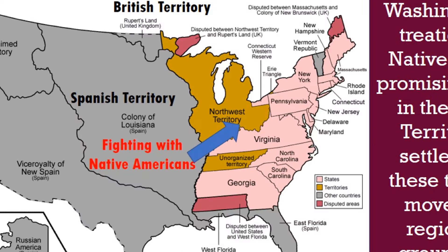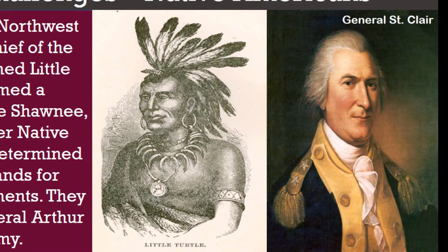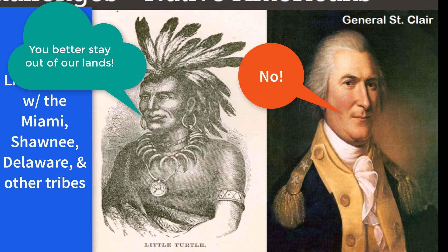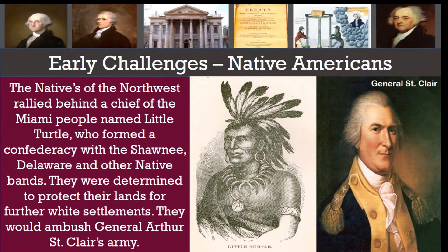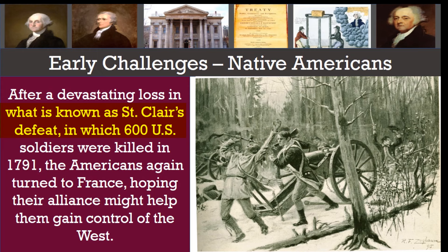This territory was surrounded by the British to the north and the Spanish to the south. The natives of the Northwest Territory rallied behind a chief of the Miami people named Little Turtle, who formed a confederacy with the Shawnee, Delaware, and other Native bands. They were determined to protect their lands from further white settlement, and they would ambush General Arthur St. Clair's army, sent out by Washington, in what is known as St. Clair's Defeat, in which 600 U.S. soldiers were killed in 1791.